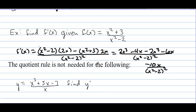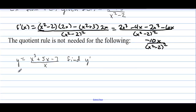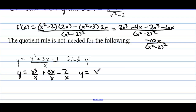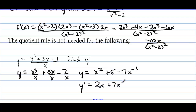The quotient rule is not needed for this problem because we can use a common denominator on a simple denominator and change the function. So y equals x squared plus 5 minus 7x to the negative 1, bringing the x to the top with a negative power.